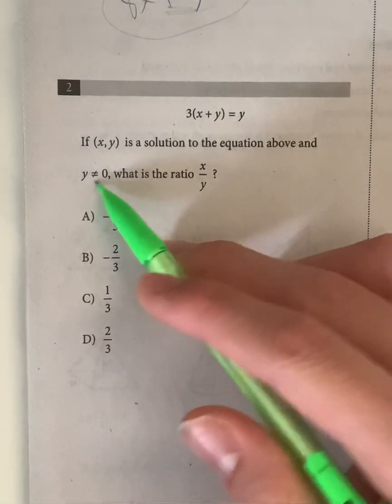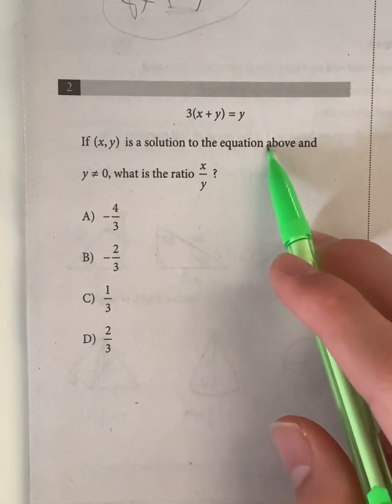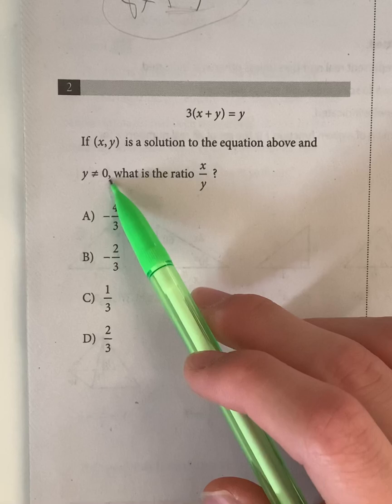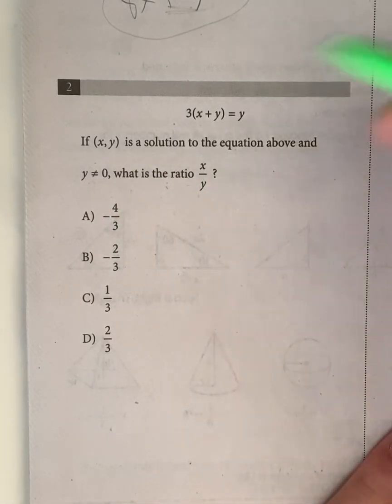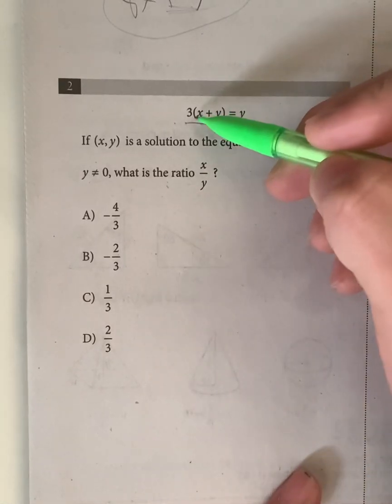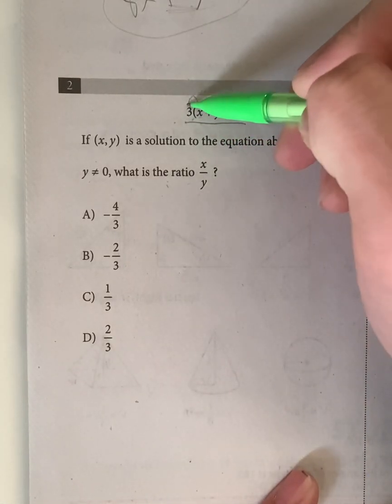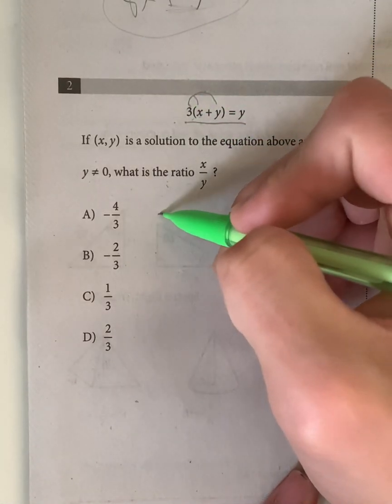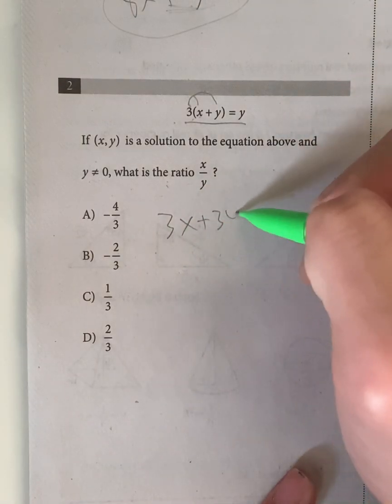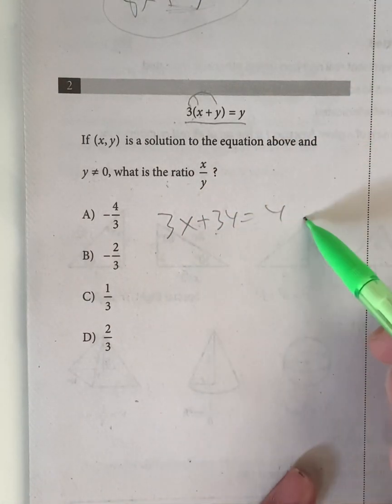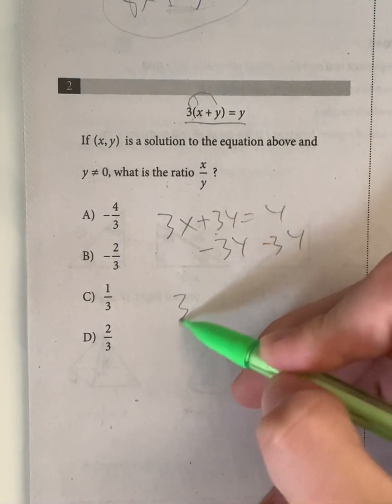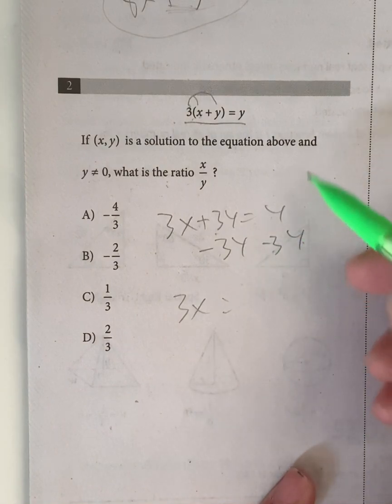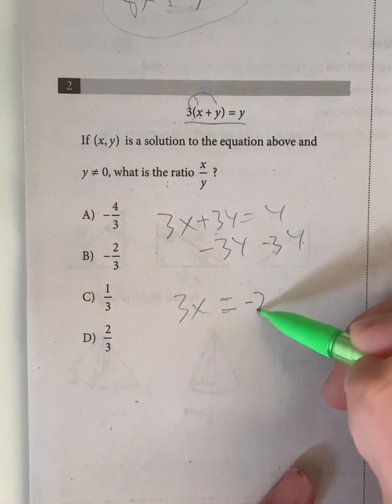Okay, moving on to question 2. If (x,y) is a solution to the equation above, and y is not equal to 0, what is the ratio x/y? So let's simplify this right here. I'm just going to multiply everything out, 3 times x and 3 times y. So this gives me 3x + 3y = y. And now let me move everything with y onto one side. So I'm just going to subtract 3y on both sides, giving me 3x = y - 3y, which is equal to -2y.